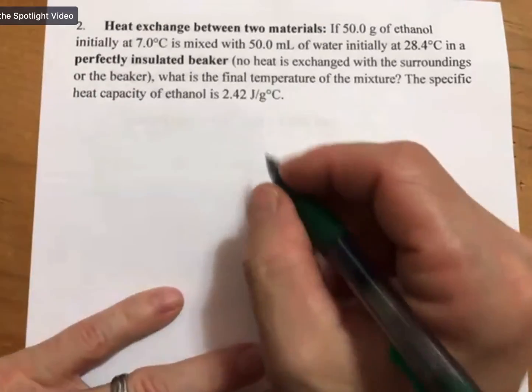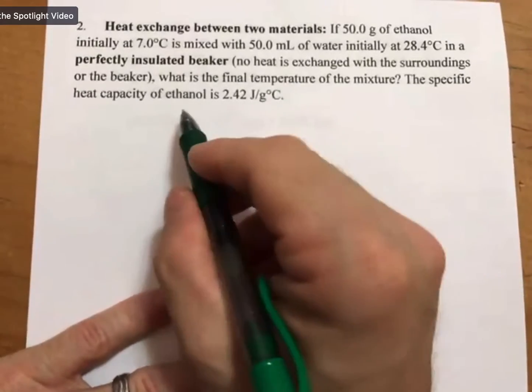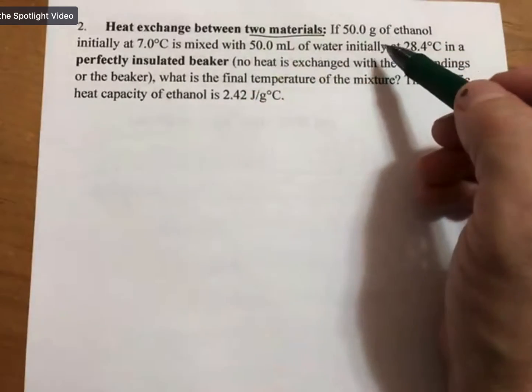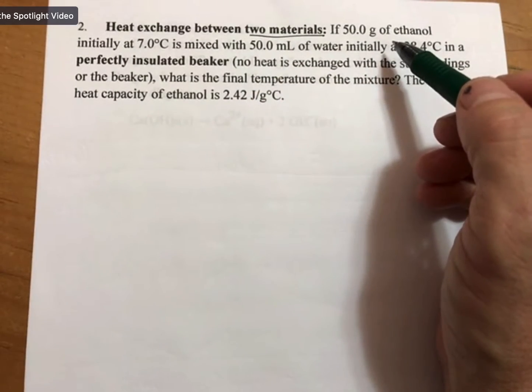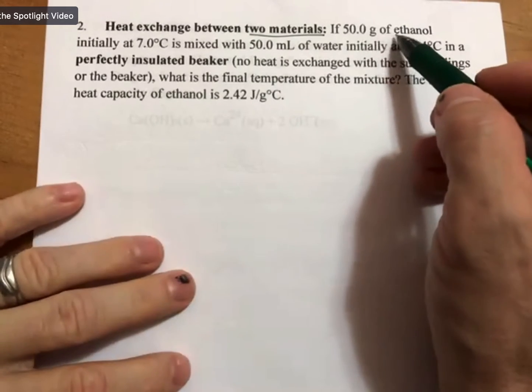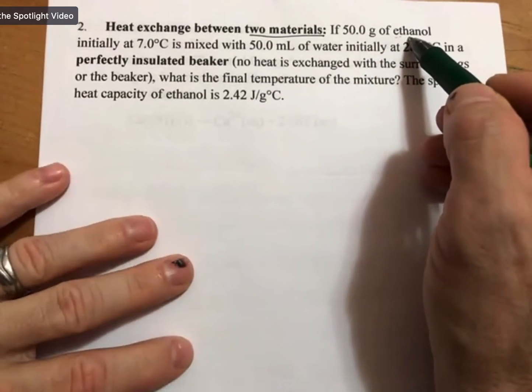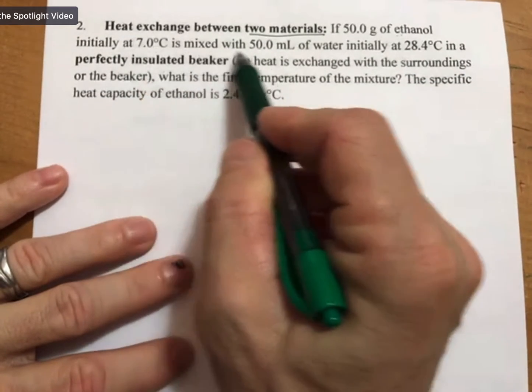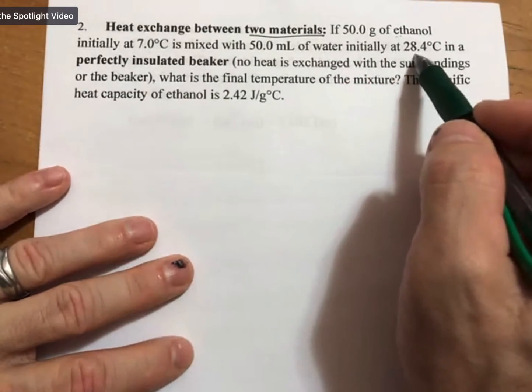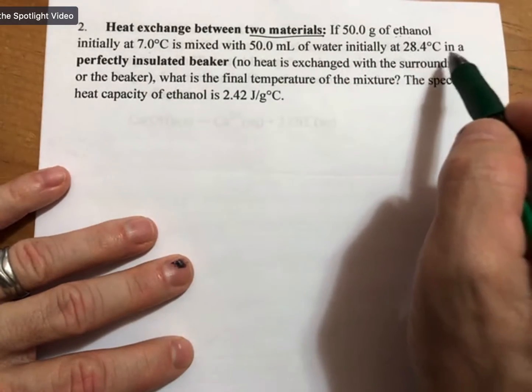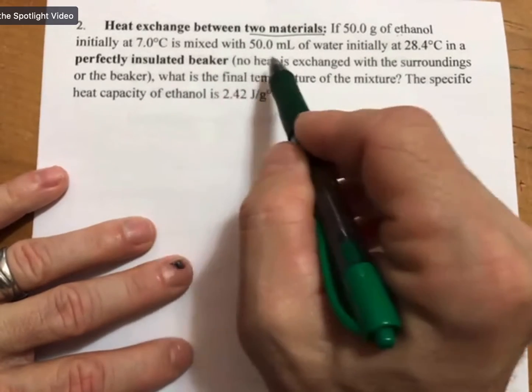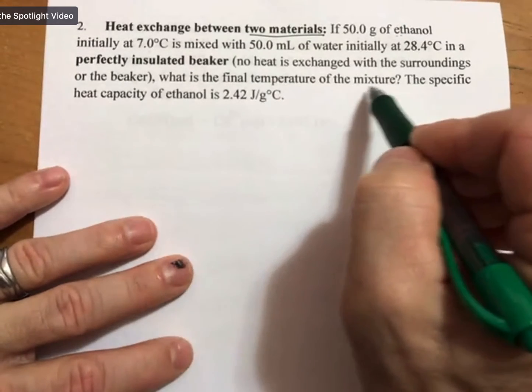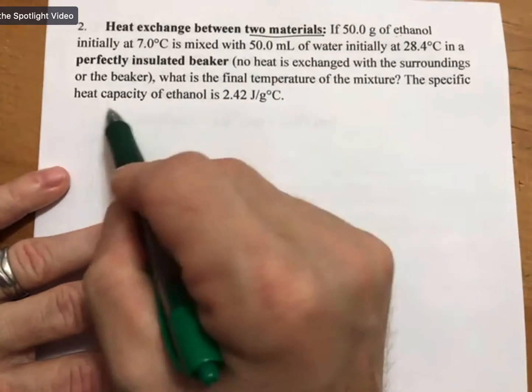I don't think it will anyway. So whenever you have two materials, this is actually closely related to one we did on the homework. It says if 50 grams of ethanol initially at 7 degrees Celsius is mixed with 50 milliliters of water initially at 28.4 degrees Celsius in a perfectly insulated beaker, no heat is exchanged with the surroundings or the beaker, what is the final temperature of the mixture? The specific heat capacity of ethanol is 2.42 joules per gram degree Celsius.